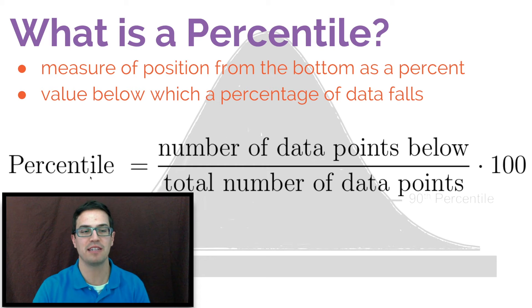Mathematically, the equation for percentile is as follows: percentile equals the number of data points below divided by the total number of data points times 100. This is probably the easiest way to think of percentile. It's how many below divided by how many total times 100.